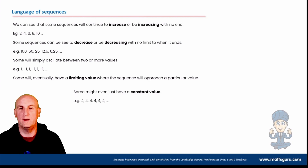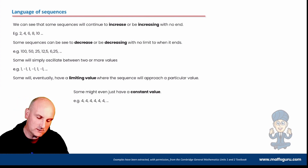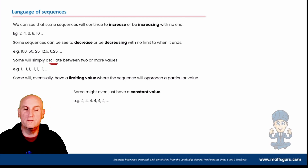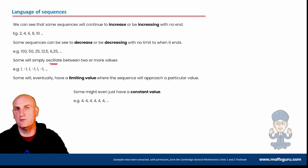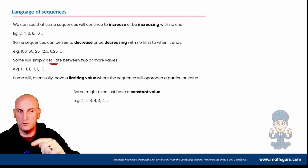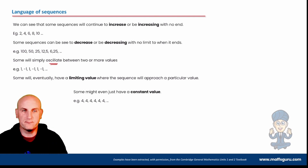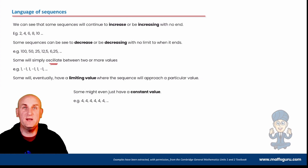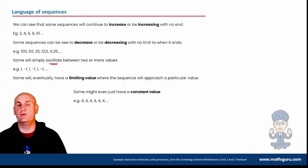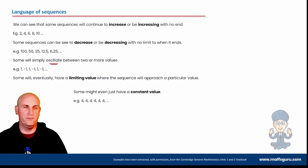Some sequences will oscillate between two or more values — for example, 1, minus 1, 1, minus 1, which could go on forever. Some will eventually have a limiting value. Some might even have just a constant value: 4, 4, 4, 4, 4. Maybe like a two-sided coin where both values are 4 — you're always going to get a 4.